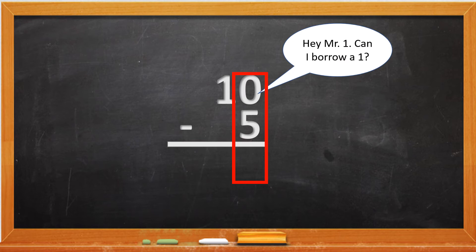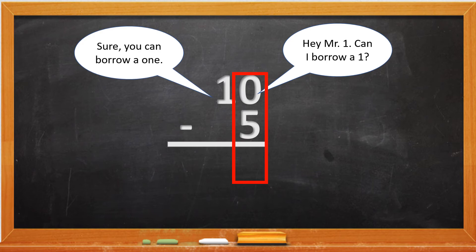And 1 will always answer, sure, you could borrow a 1. So the 1 becomes a 0 and the 0 becomes a 10. And now we take 10 minus 5, do it in your head, the answer will be 5.